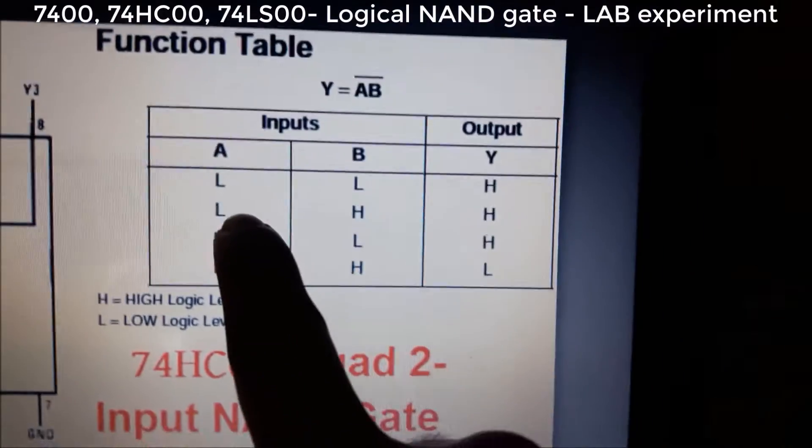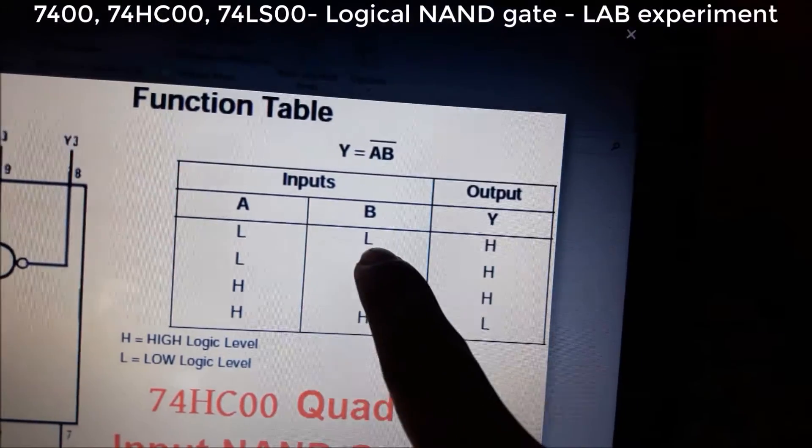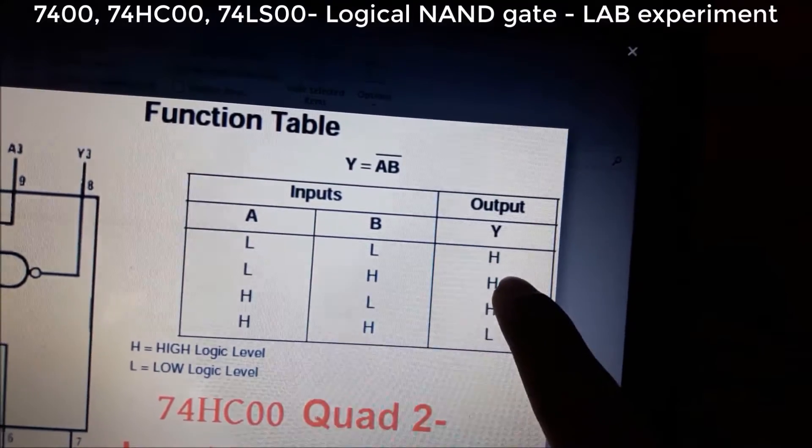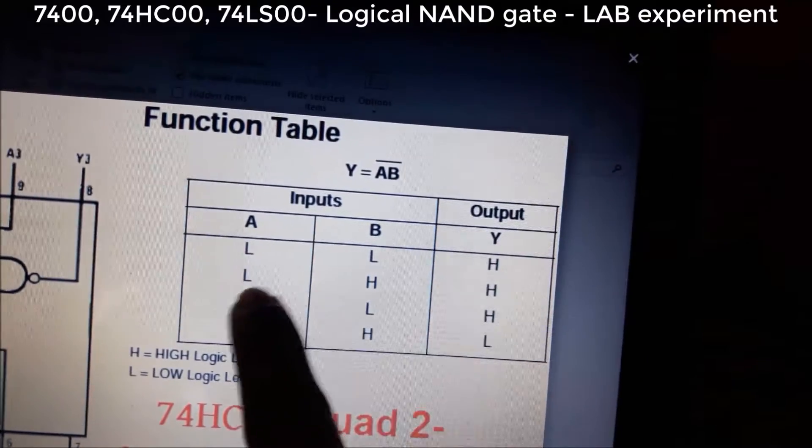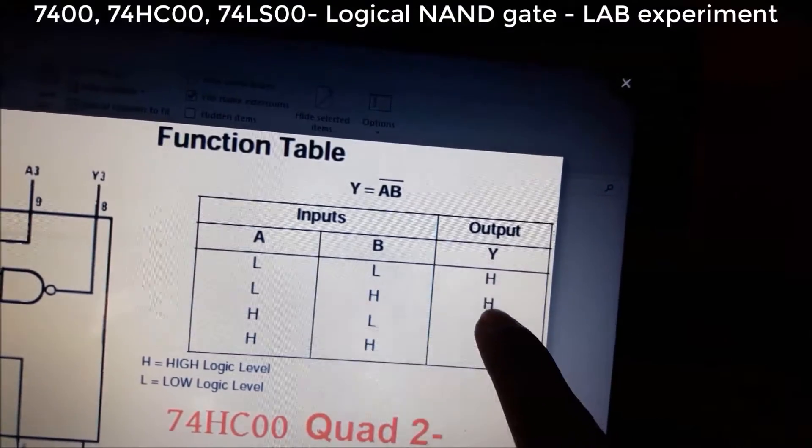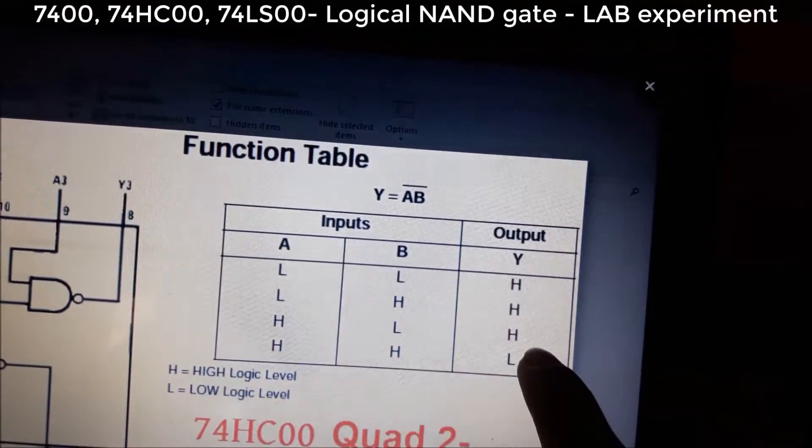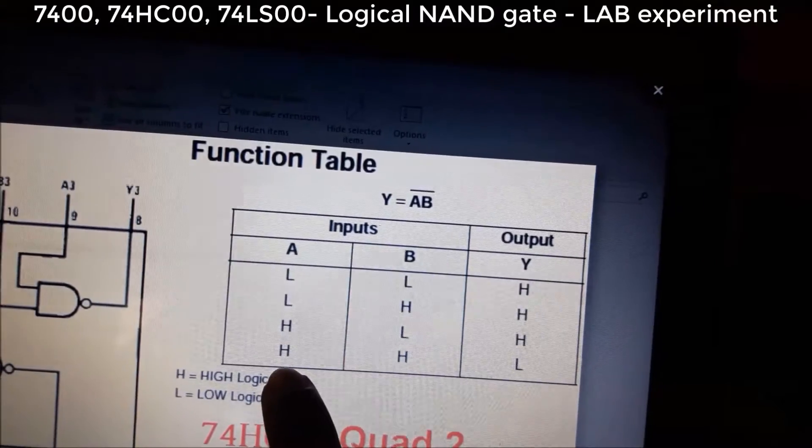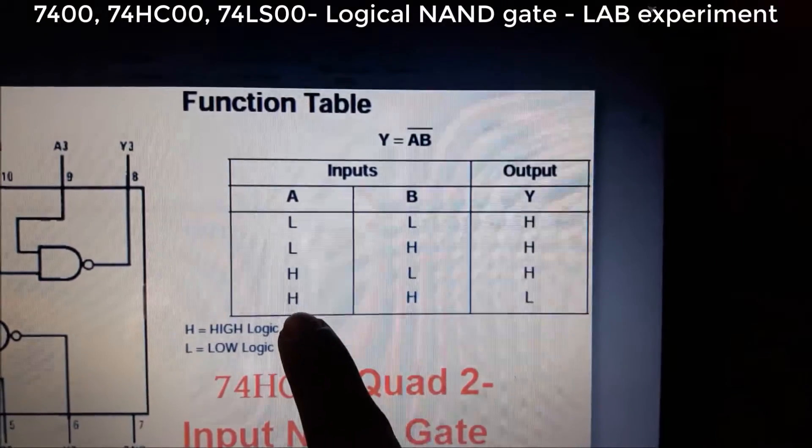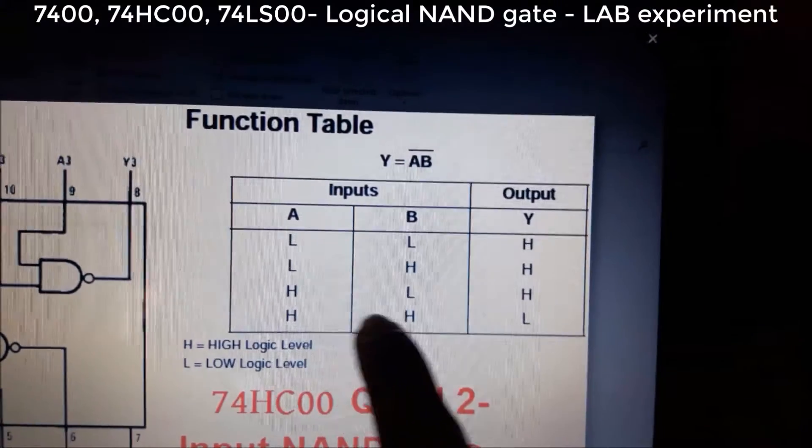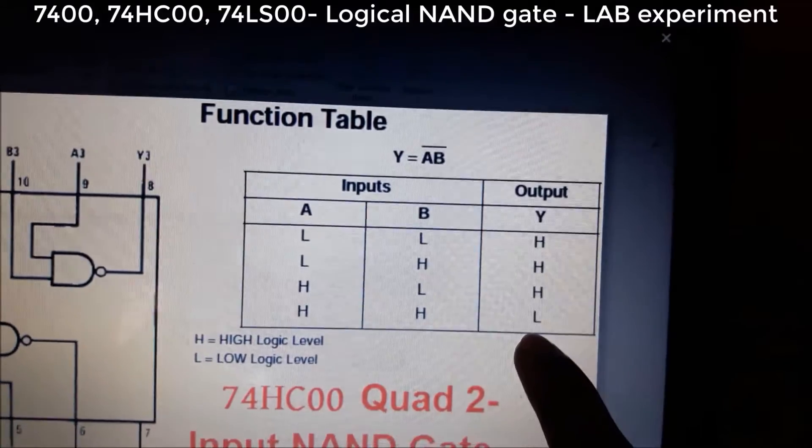Here is the truth table. If we give low and low, then the output is high. If we give low and high, then the output is also high. If we give high and low, then the output is also high. Only when we give the input as high and high, then the output will be low.